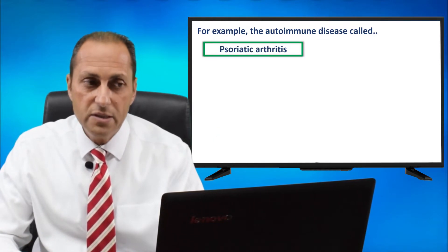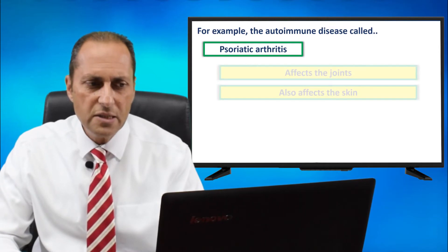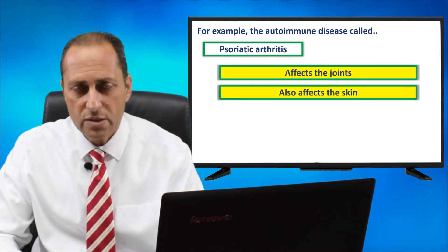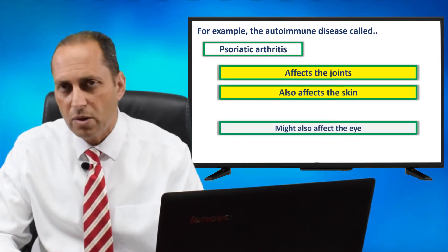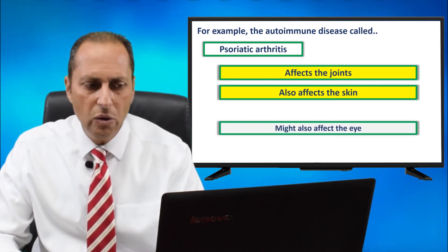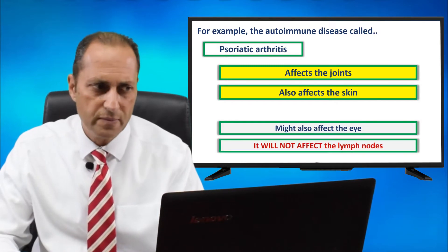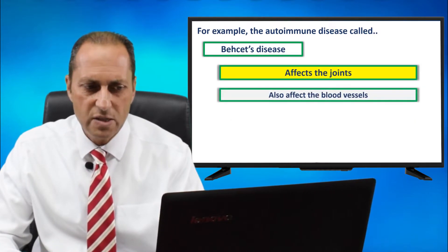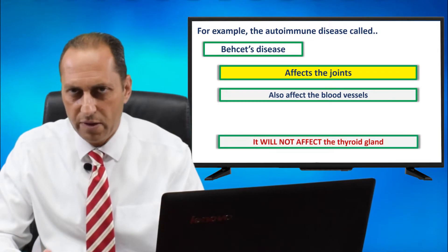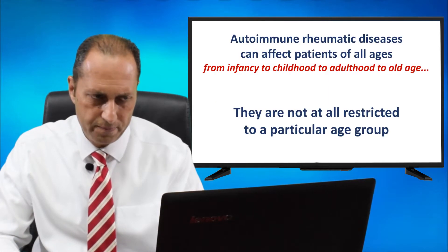Psoriatic arthritis, another autoimmune rheumatic disease, affects the joints, affects the skin, might also affect the eye, but will not affect the lymph nodes. Behçet's disease affects the joints and blood vessels, but will not affect the thyroid gland, and so on.